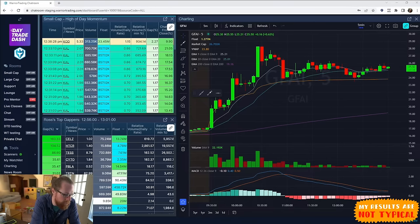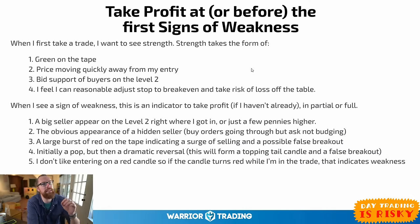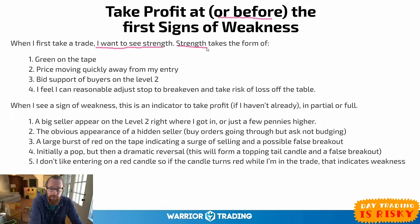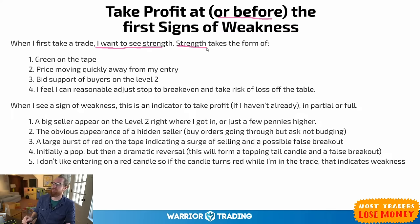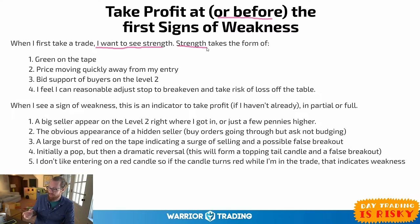Let's talk about taking profit — step three: take profit at or before the first signs of weakness. When I first take a trade I want to see strength. You've chosen the right stock — it's already made a big move, it's got high relative volume — you've gotten in on a pullback near a moving average, and now you want to see some strength. What does strength look like? Green on the tape, the price moving quickly away from your entry, bid support, buyers on the level two.